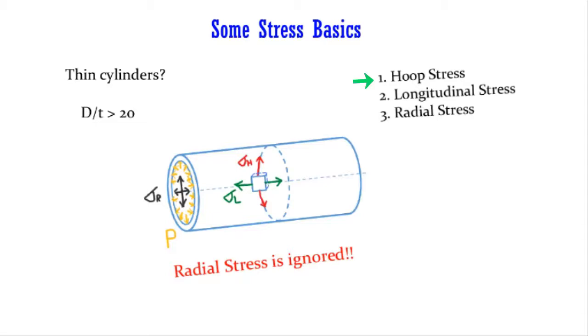Number one: hoop or circumferential stress. They are in the direction of a tangent on any point on a circumference. These stresses will try to open up the cylinder.